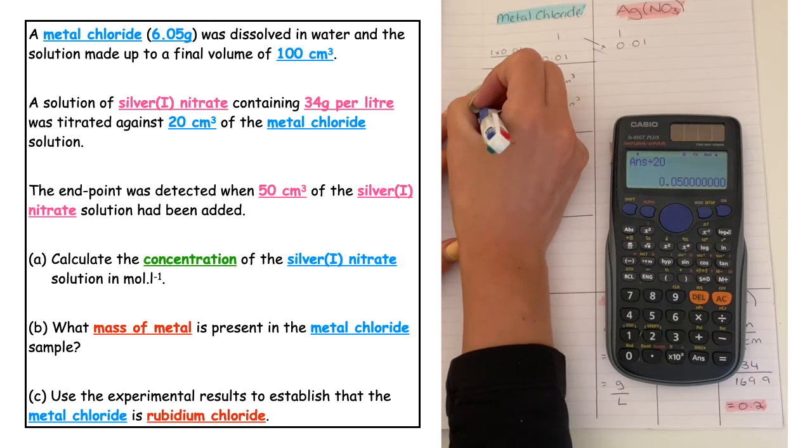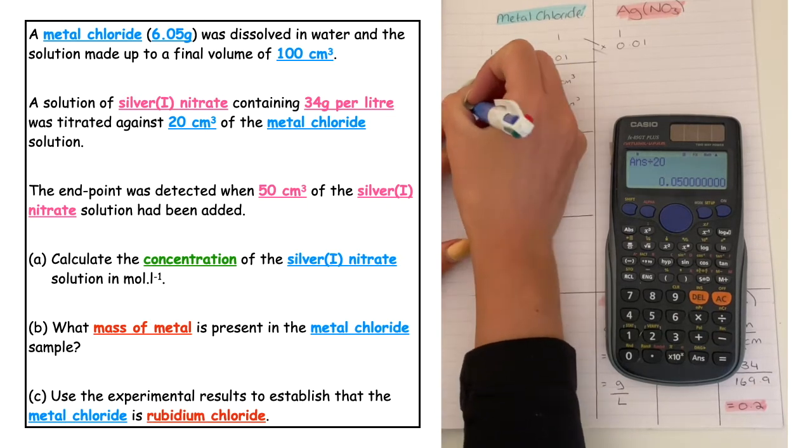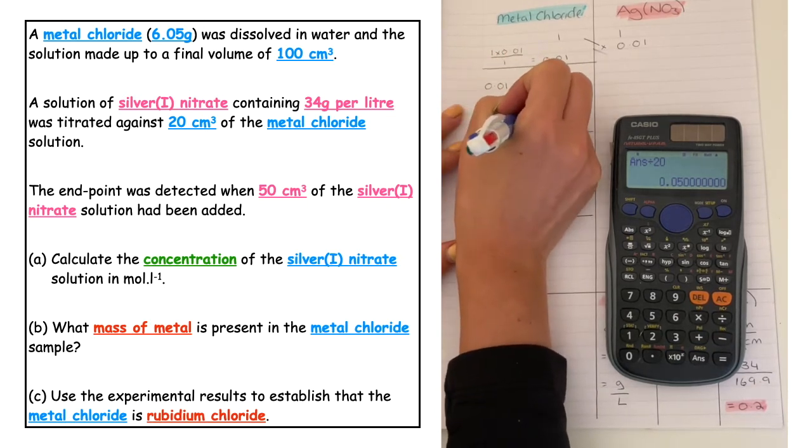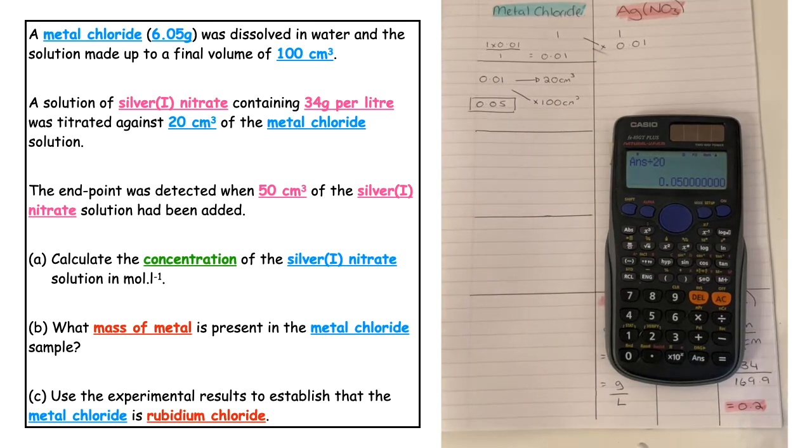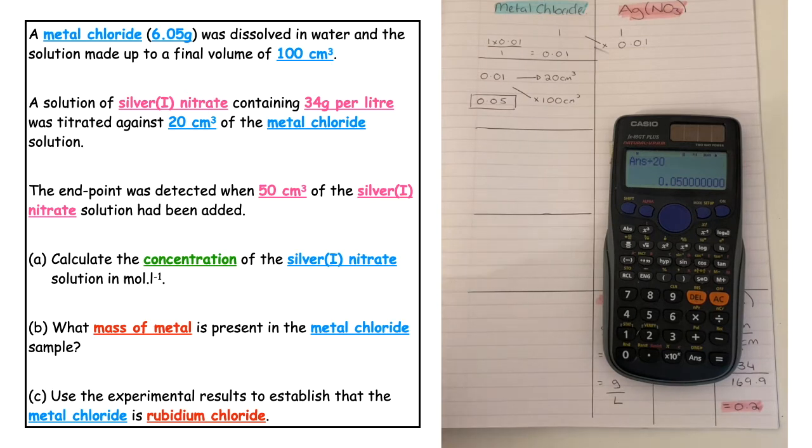In our calculators we've got 0.01, we'll times that by 100, divide that by 20, and that tells us that we actually should have 0.05 moles of our metal chloride in our standard flask. I'm going to highlight that blue because that's what we should have.